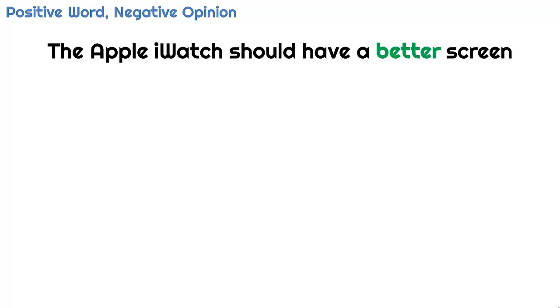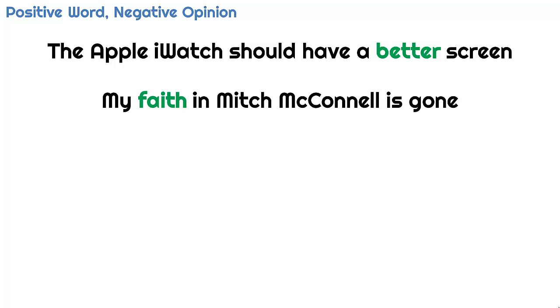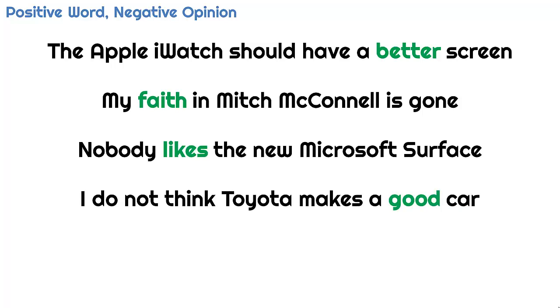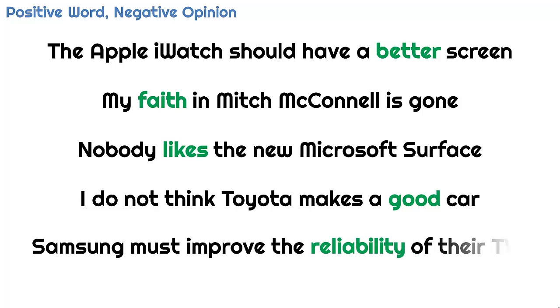Now for some quick examples of texts that humans can easily rate as positive or negative, but that an algorithm could struggle with. These sentences contain a positive sentiment word, but their opinion is negative: 'The Apple iWatch should have a better screen.' 'My faith in Mitch McConnell is gone.' 'Nobody likes the new Microsoft Surface.' 'I do not think Toyota makes a good car.' 'Samsung mustn't prove the reliability of their TVs.' All of these sentiment words are positive, but each expresses a negative sentiment.